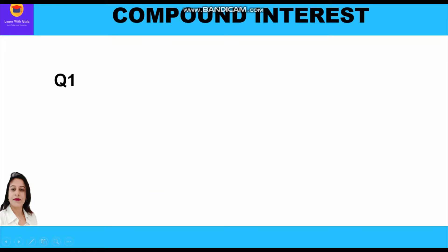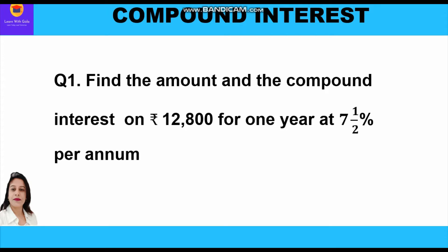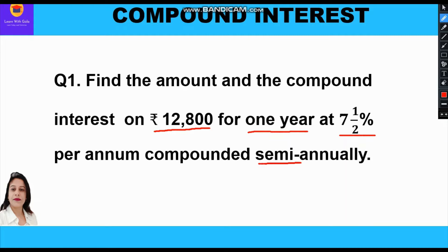Now let's take the first question: find the amount and compound interest on ₹12,800 for one year at seven and a half percent per annum compounded semi-annually. We have to find the amount and compound interest on principal ₹12,800, time period one year, rate seven and a half percent per annum, compounded semi-annually.